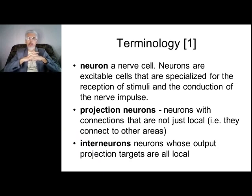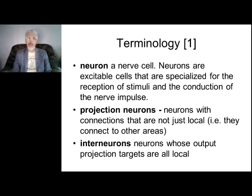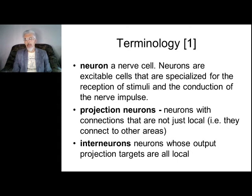Next term: projections of neurons. Projections are the input and output channels which connect neurons with other neurons or with receptors. In the CNS, the majority of connections are between neurons. In the peripheral nervous system, connections link receptors with neurons. Receptors are part of neurons too, and are usually situated in the peripheral nervous system.